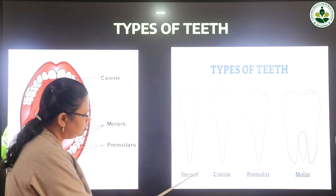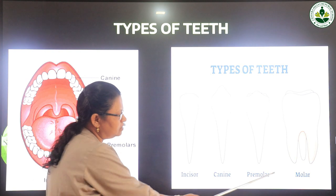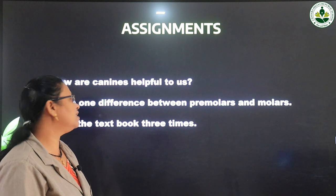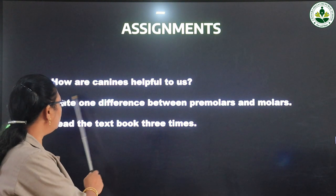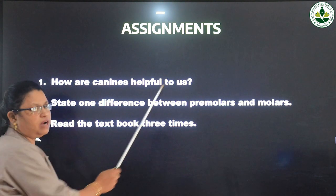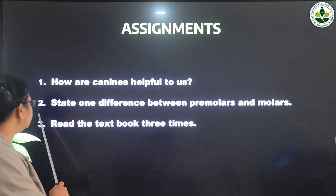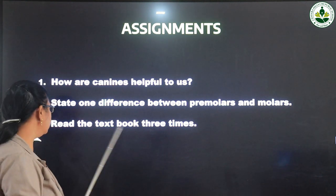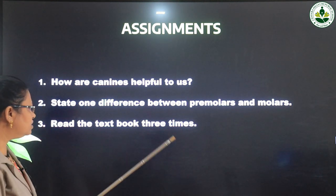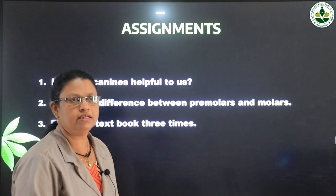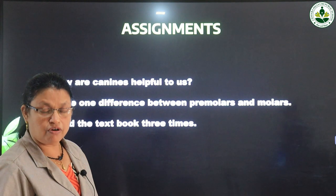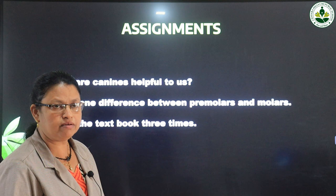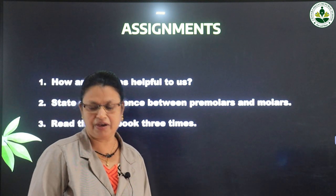So the four types are incisors, canines, premolars, and molars. You have two assignments: first, how are canines helpful to us? Second, state one difference between premolars and molars. Read the textbook three times, find the important points, mark them, and study. Thank you.